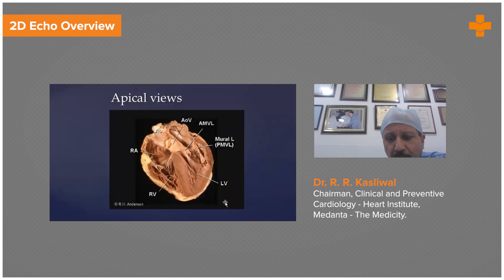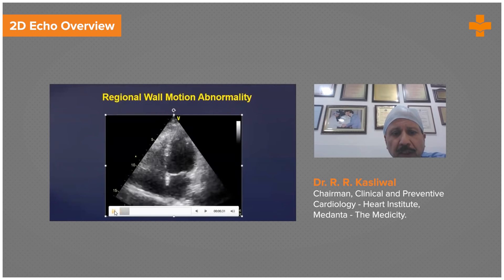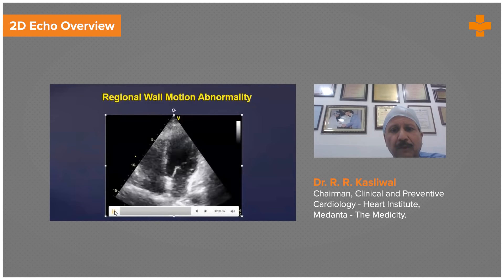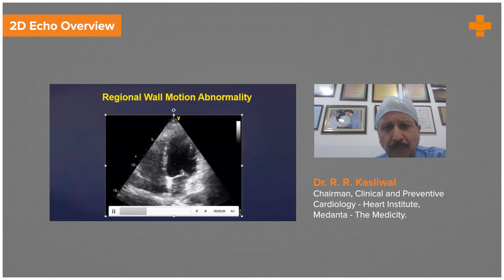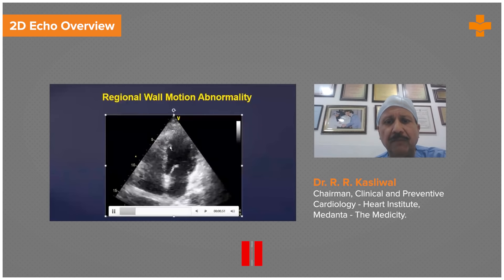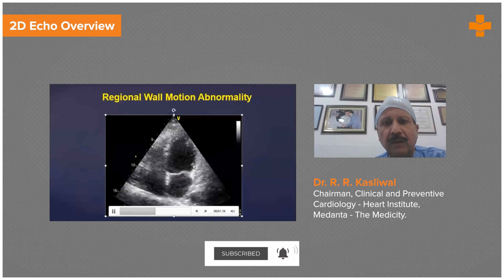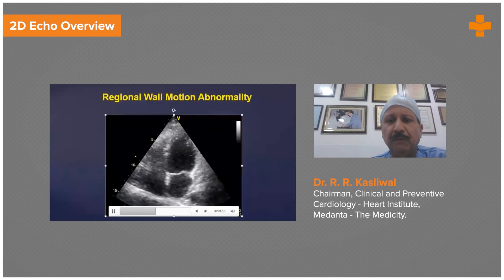These are the apical views. You can see very clearly the aorta, RA, RV — the same things you can see in the apical four-chamber view of a patient. While the patient is comfortably lying, you can see the LV cavity, the mitral valve, the left atrium, the right ventricle, the right atrium, the interventricular septum, and the complete walls. In many views, all 17 segments can be visualized.